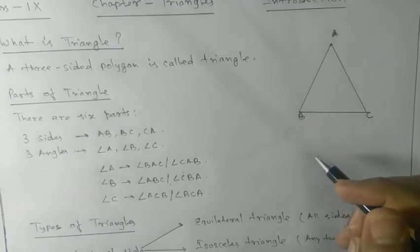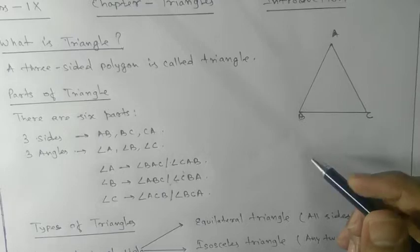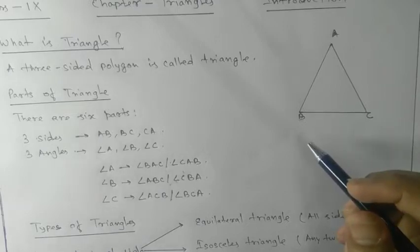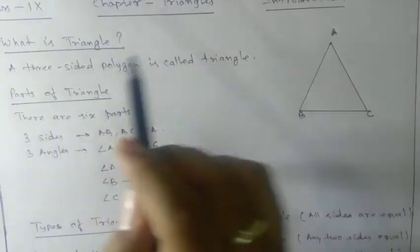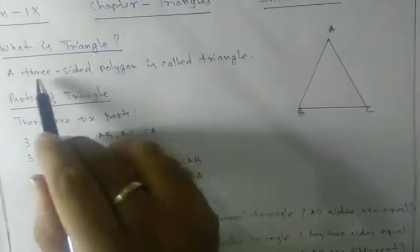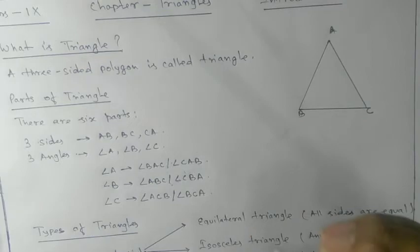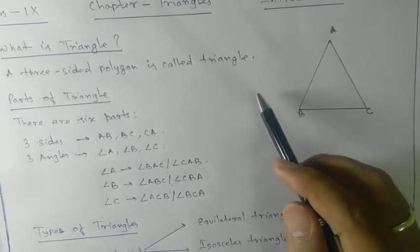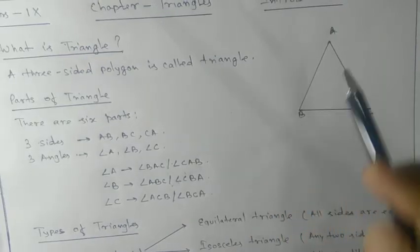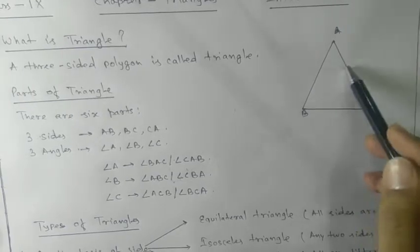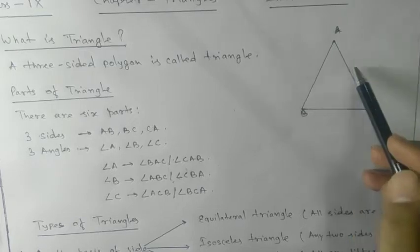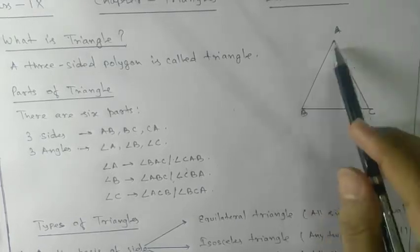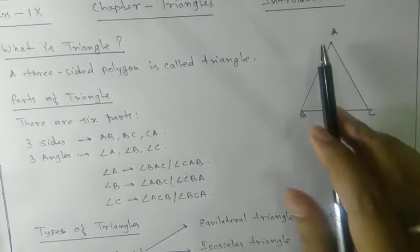Namaste students. Today we are going to start a new chapter named Triangles. First we will have to know what we mean by triangle. A triangle is a three-sided polygon. Polygon means a closed rectilinear figure — rectilinear means made of line segments. You can see that this figure is closed with three sides, and this type of figure has a special name called triangle.